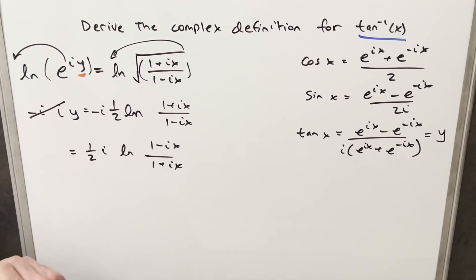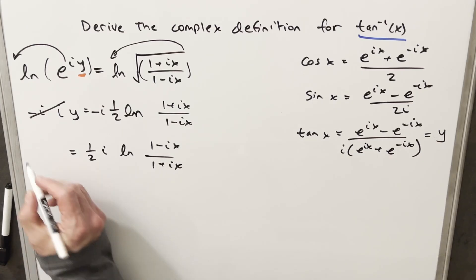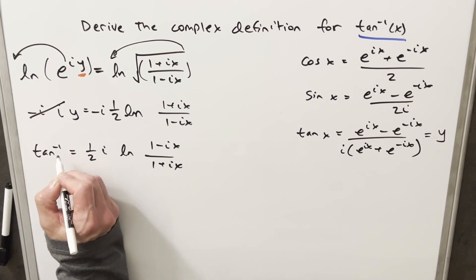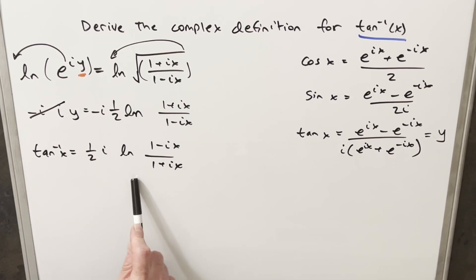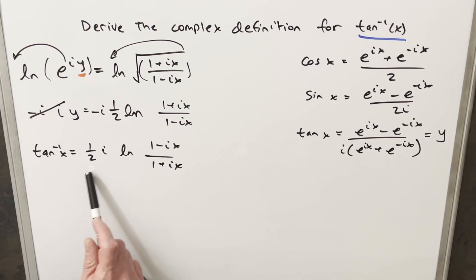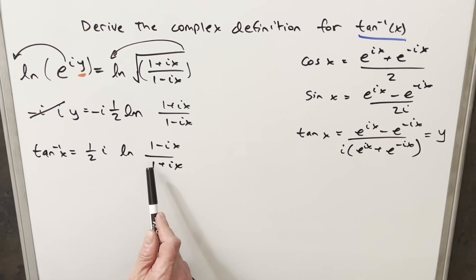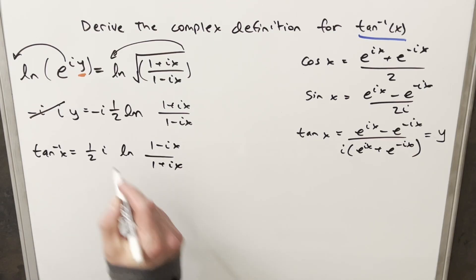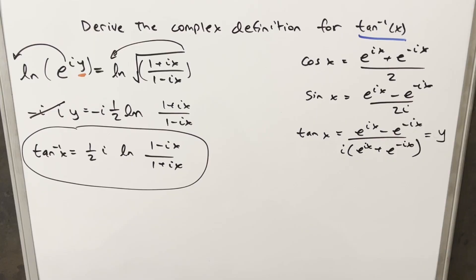Remember, y is arctan of x because we reversed the variables. So for our complex definition of arctan of x, we've got (1/2i) times the natural log of (1 minus ix) over (1 plus ix). And that's it — thanks everyone for watching, have a good day.